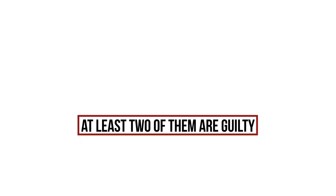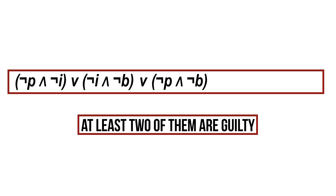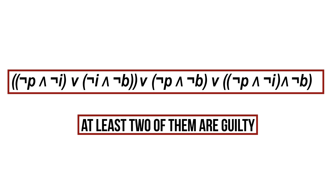At least two of them are guilty — that is our first premise. We translate this into propositional logic by expressing that either two of them are guilty — Philip and Irene, Irene and Bob, or Philip and Bob — or all three of them are. We will see a more elegant way to express this when we study predicate logic. To make this formula well-formed, we add some brackets. We are now going to find out in which situations this premise is true using a truth table.